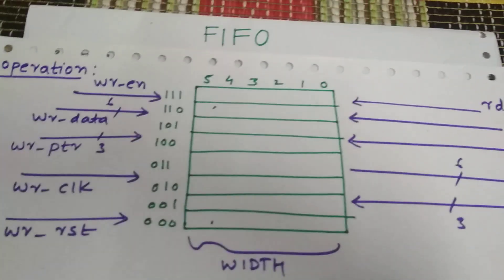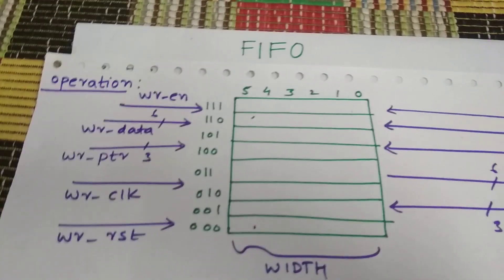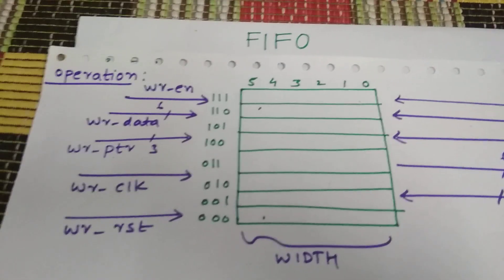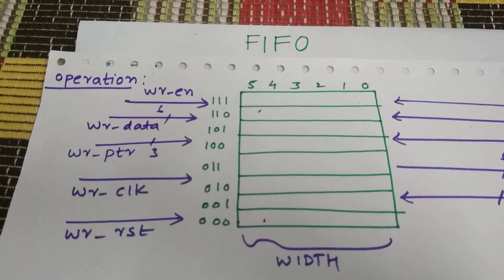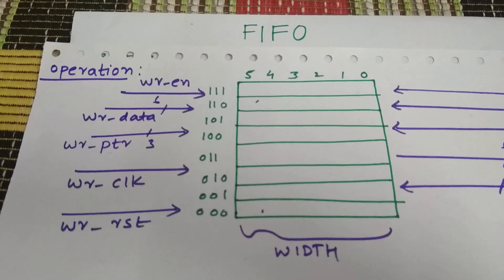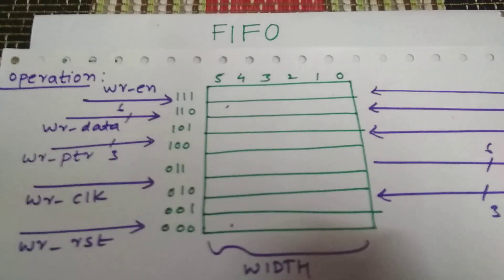So I'm going to talk about the full condition and empty conditions. So in the beginning, a FIFO is empty. The FIFO is empty, and both write pointer and read pointer